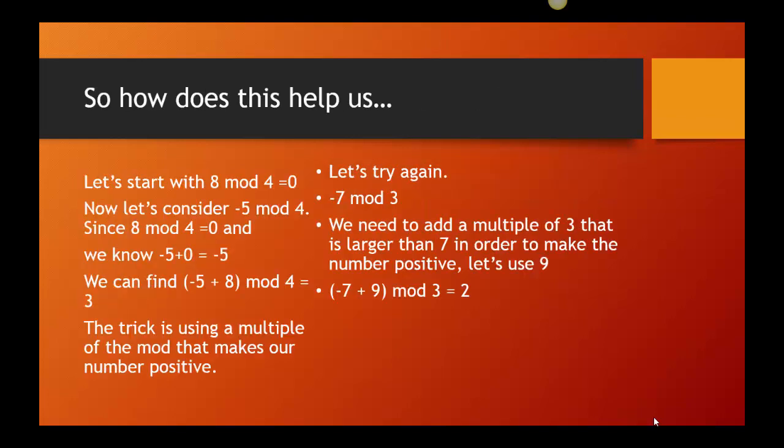Alright. So, how does this help us? Well, let's start with an example to see how this works. Let's take something easy. 8 mod 4 is 0. Cool? No remainder. Now, let's take a negative mod, like negative 5 mod 4. Alright. So, we're going to put these two concepts together. I'm going to take the idea that 8 mod 4 is 0, and that I need to figure out what negative 5 mod 4 is.